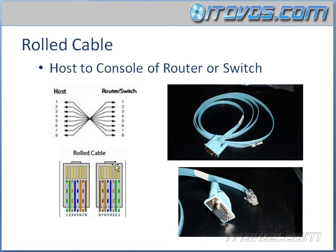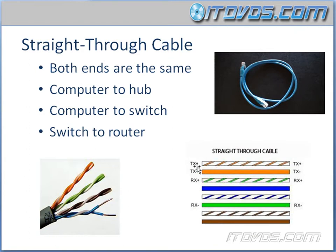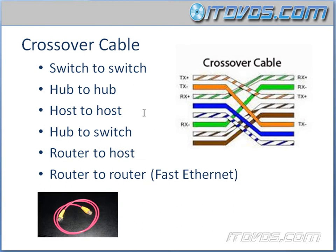Here's how to remember all three cable types. A rolled cable is easy — the ends are just opposites of each other. A straight-through is easy too — both ends are the same. And if it's not straight-through or rolled, it's a crossover. Remember when to use each: straight-through for normal connections, crossover for connecting like devices, and rolled to console into a router or switch.